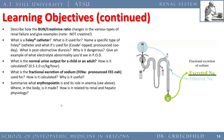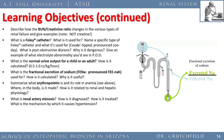Erythropoietin is made in the kidney and acts in the bone marrow. What is renal artery stenosis and how do we diagnose it? It can be diagnosed with CTA, MRA, ultrasound, or sometimes on physical exam by hearing a bruit in the flank region. It is usually treated with a stent; surgery is sometimes necessary but rare today. The mechanism by which it causes hypertension is the renin-angiotensin cascade.